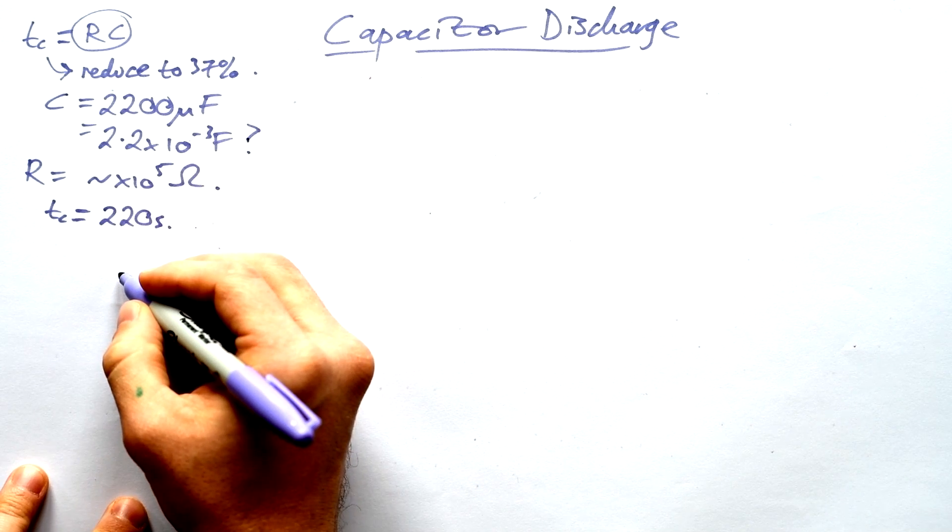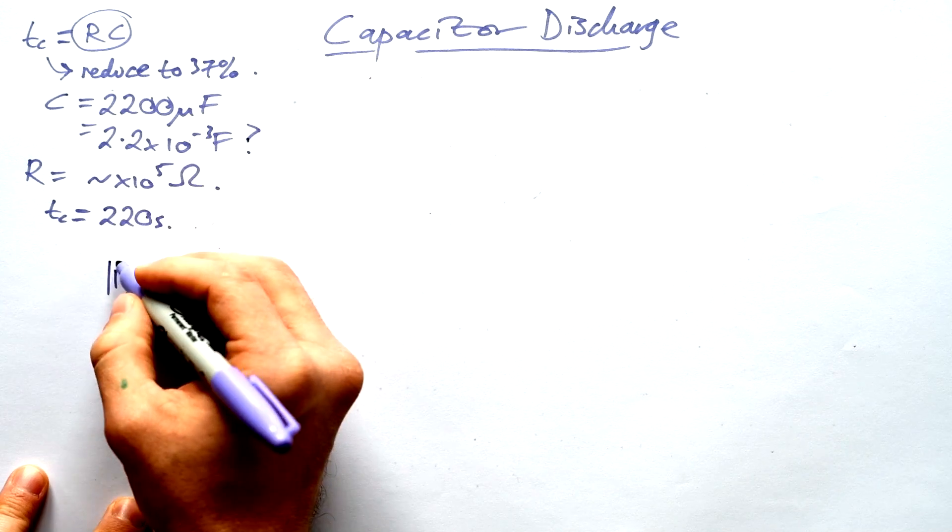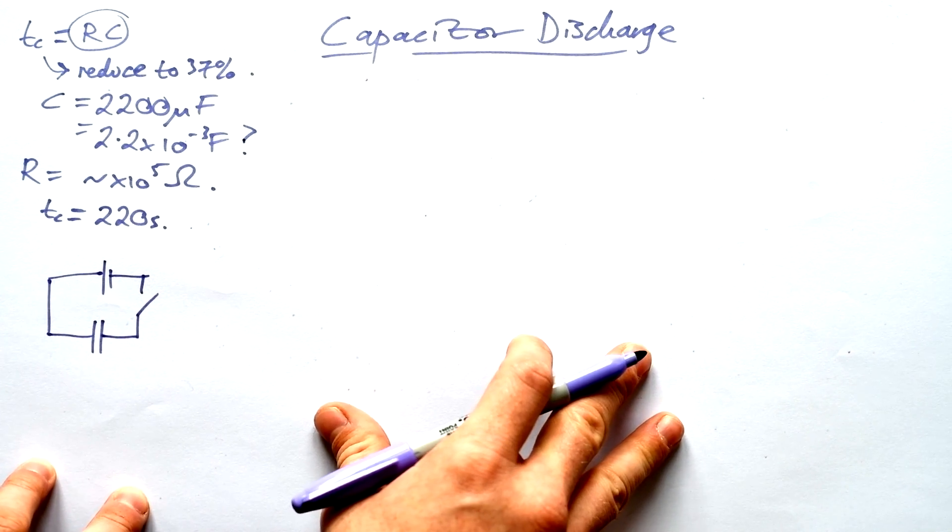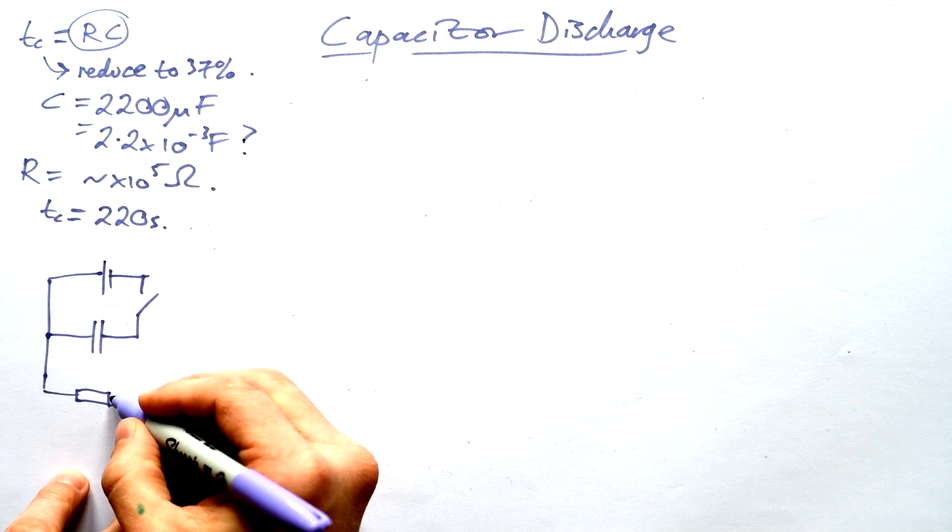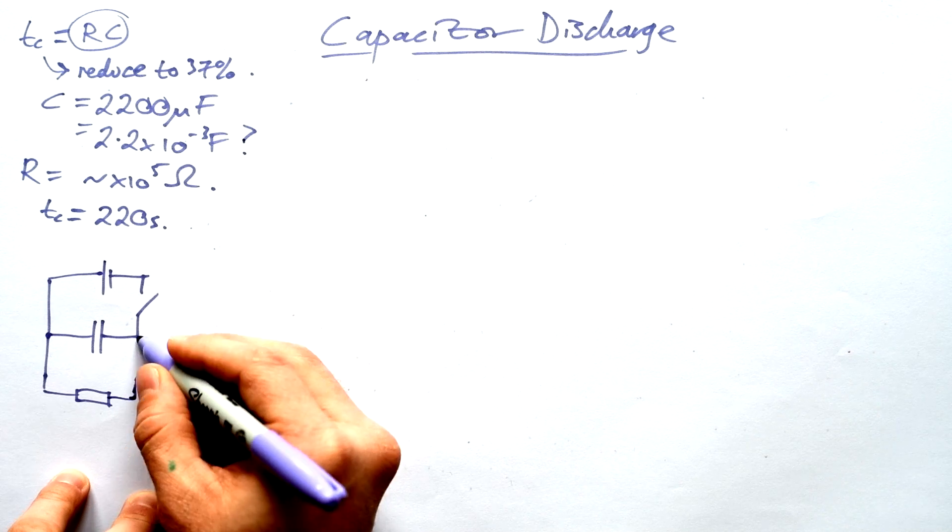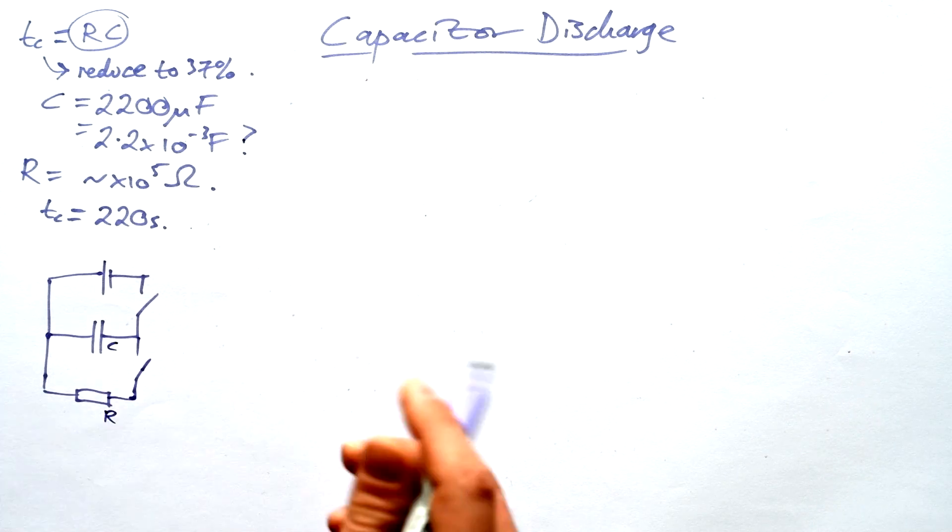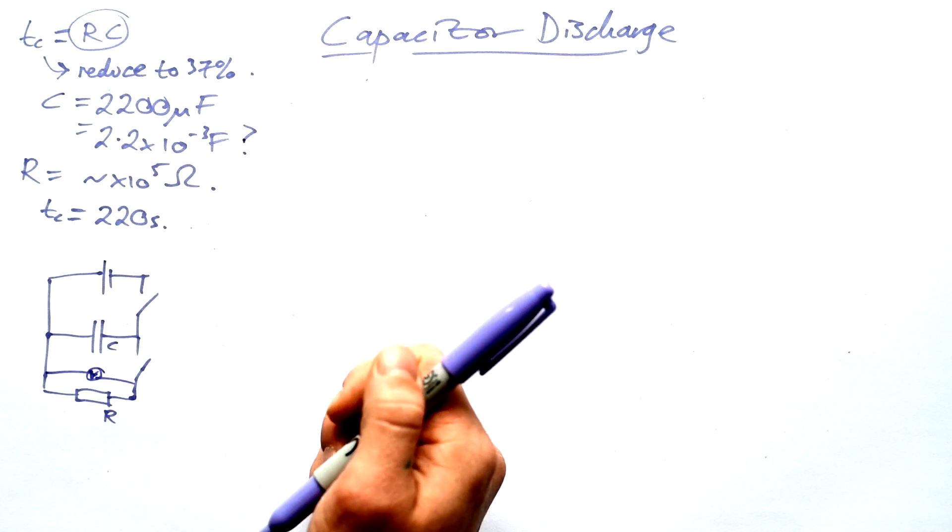So the circuit is going to look something like this. We have our battery or a cell that's going to be connected directly to our capacitor. We want it to charge very quickly like that so we can just close it. But then we're going to have the capacitor then in its own circuit with a resistor. That's our capacitor. That's our resistor. And then we want a voltmeter across the capacitor. We can just put it straight across the circuit like that.